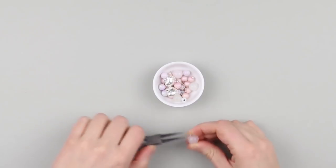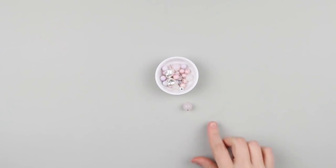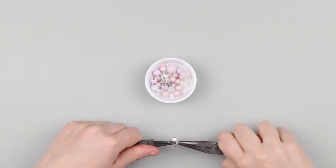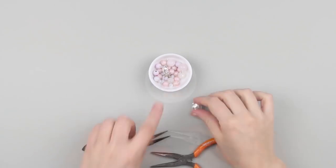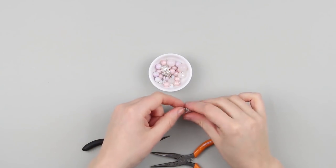Make a loop using the round nose pliers. Work up the other beads in the same way. Take a metal heart and put it on the ring. Do the same to the other heart-shaped bead.